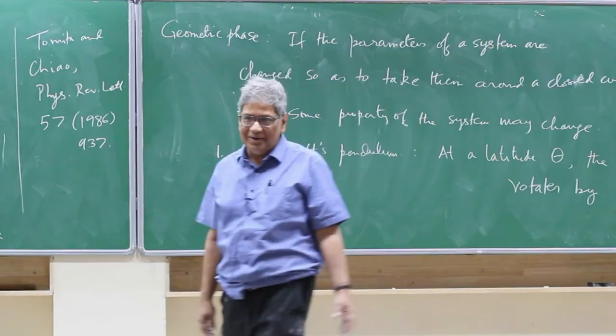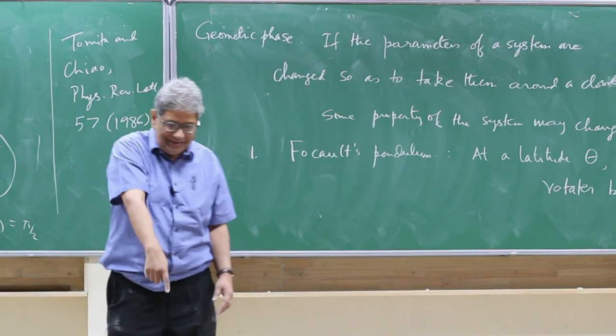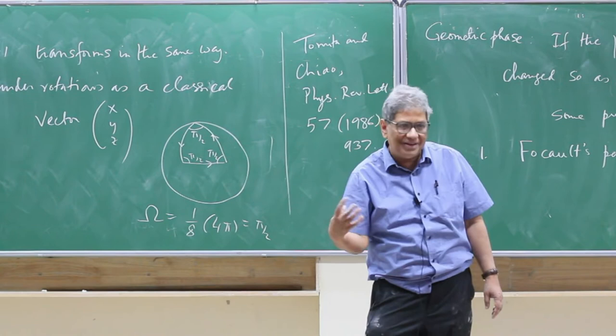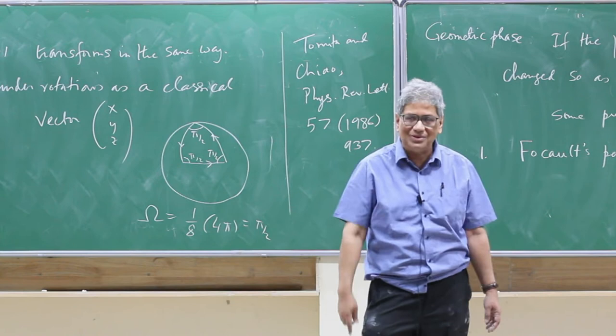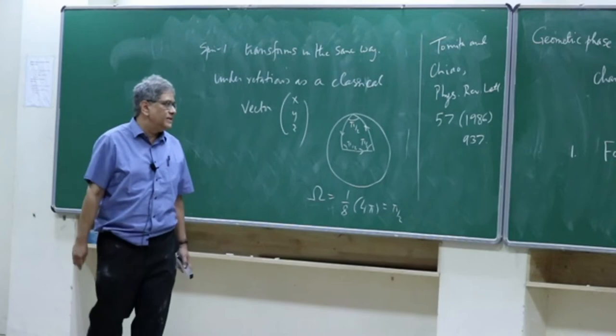This is an example of geometric phase. At the north and south poles the rotation is 2π, which is easy to understand: looking down from the north pole, the pendulum oscillates in a fixed plane in space, but the earth rotates underneath it by 2π in 24 hours. So the plane appears to have rotated by 2π relative to the earth. At the equator there is no rotation.